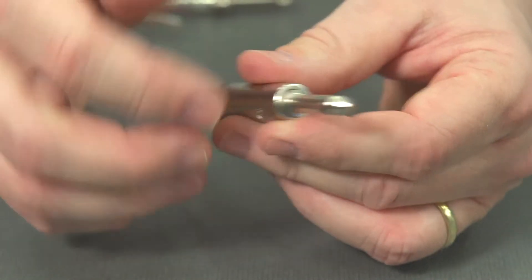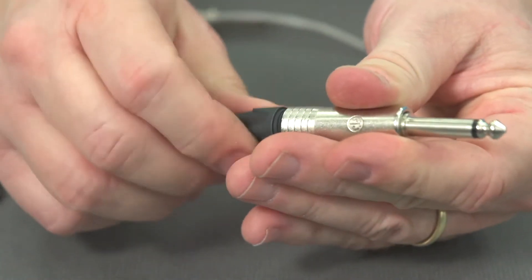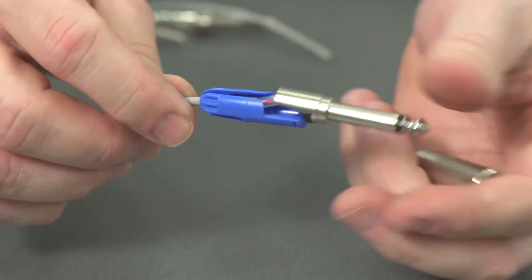All right, let's see what this last one looks like. Another quarter-inch tip sleeve. No heat shrink coming out the back. Let's see what we find.